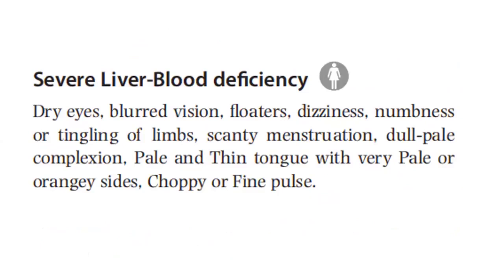Severe liver blood deficiency presents with dry eyes, blurred vision, floaters, dizziness, numbness or tingling of limbs, scanty menstruation, and a dull pale complexion. The tongue is pale and thin with very pale or orange-tinged sides, and the pulse is choppy or fine.